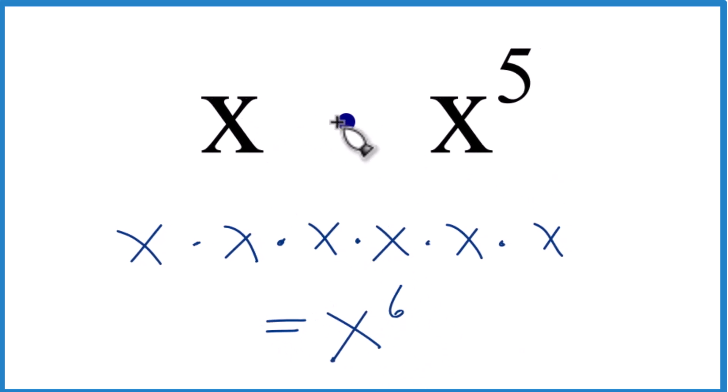So in answer to our question, x times x to the fifth, that is x to the sixth. There's another way we could do this that's perhaps a little more general.